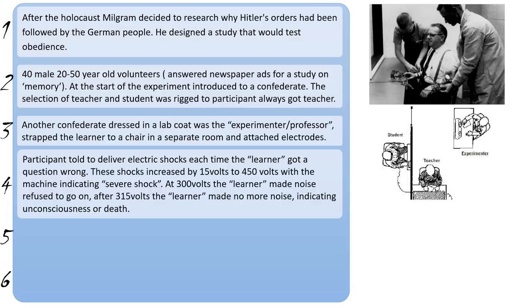Of course these weren't real electric shocks, but it was important that the teacher thought they would be. They were sat at this bank of switches and increased the shock by 15 volts all the way up to 450 volts. At the end of the machine it had a label saying 'severe shock'. As the shocks went up, the learner in the other room — the confederate — would make lots of noise and start to refuse to carry on with the experiment.